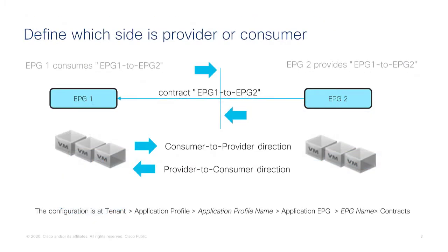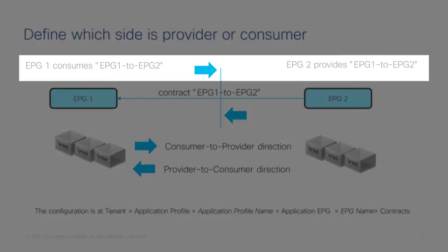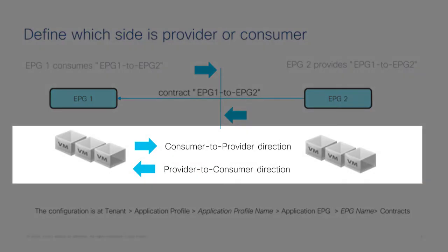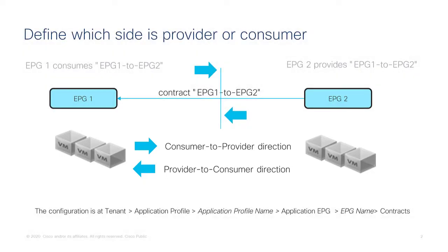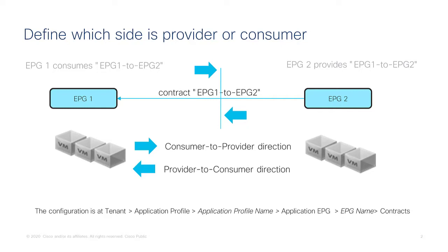When you configure contracts to filter traffic, you have to define which EPG is a provider of the contract and which EPG is a consumer of the contract. This is primarily to establish a direction, because in the hardware you want filters applied in the EPG1-to-EPG2 direction and other filters applied in the EPG2-to-EPG1 direction. This maps to consumer-to-provider direction or provider-to-consumer direction.